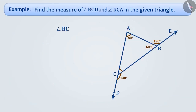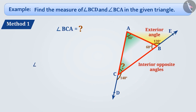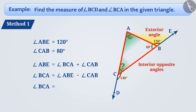Now, can you tell us how we will find the measure of angle BCA? Think for a while. We can find it using different methods. Here we can see that angle ABE is the exterior angle of triangle ABC, and angle BCA and angle CAB are the two interior opposite angles of angle ABE. So we can say that angle ABE is equal to angle BCA plus angle CAB, or we can write it as angle BCA is equal to angle ABE minus angle CAB. Since angle ABE is equal to 120 degrees and angle CAB is equal to 80 degrees, therefore angle BCA is equal to 120 degrees minus 80 degrees, which is equal to 40 degrees.